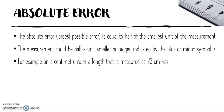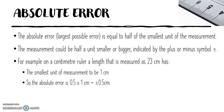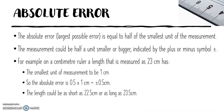For example, on a centimetre ruler, a length that is measured as 23 centimetres has the smallest unit of measurement of 1 centimetre, so the absolute error is 0.5 times 1 centimetre, which equals plus or minus 0.5 centimetres. The length could be as short as 22.5 centimetres or as long as 23.5 centimetres.